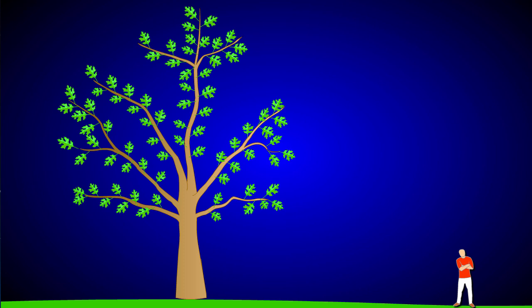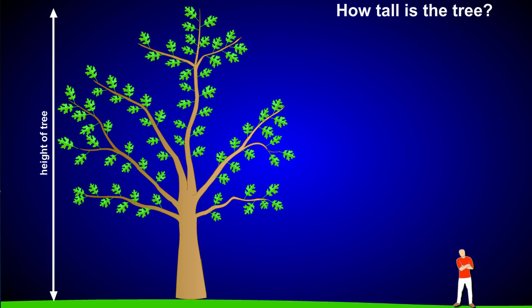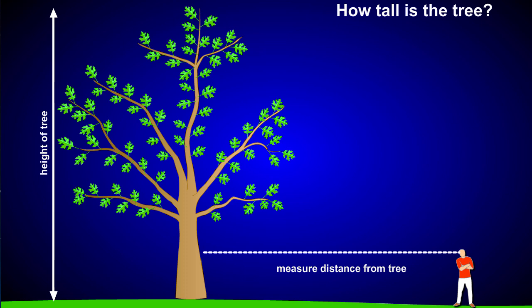Trigonometry can be used to measure the height of any tall object, like this tree. Here's how you do it. From the base of the tree, walk away a known distance in a straight line — let's say 50 feet.